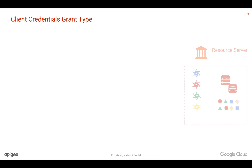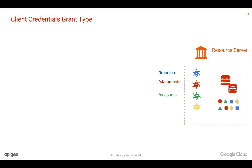For example, let's say you have a resource server which is your backend server and you have various kinds of data exposed using APIs. These APIs can be — for example, let's say it's an XYZ bank and you have a Transfers API, Statements API, and Accounts API. Let's say you want to give access only to the Statements API — that's the API resource. So we're going to see how this works in the client credentials grant type.